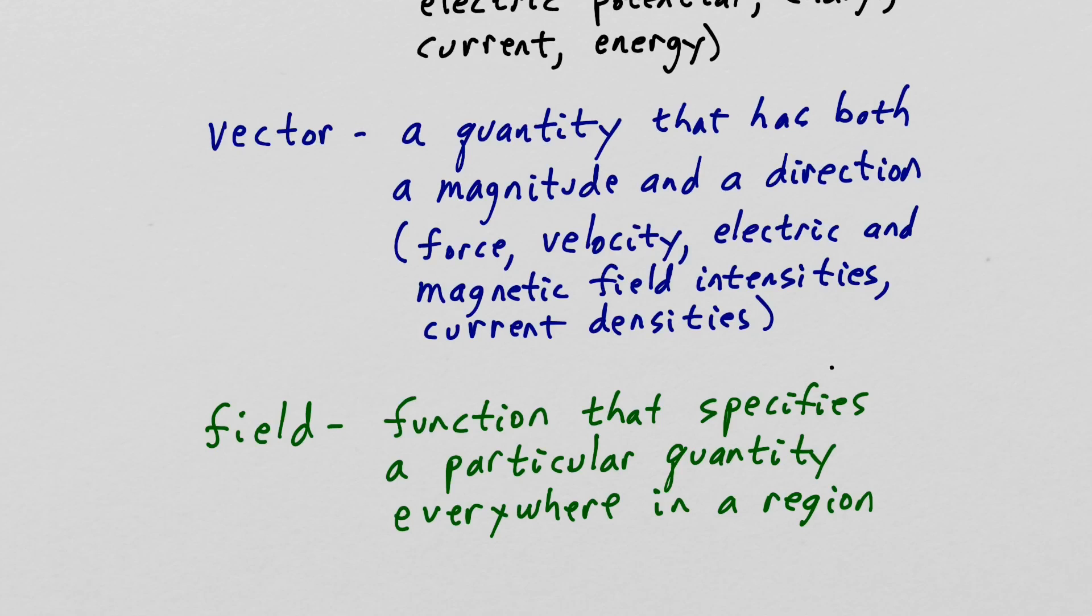We will represent a vector with an arrow, and the length of that vector will be the magnitude, and of course, the direction it's pointing will be the direction of the vector. Now, it will be useful to introduce the concept of a unit vector, and a unit vector is just a vector of magnitude 1 that is pointing in the direction of our vector. So we can represent our vector as the magnitude times our unit vector, a hat, and I will write that vector as a with an arrow over it.